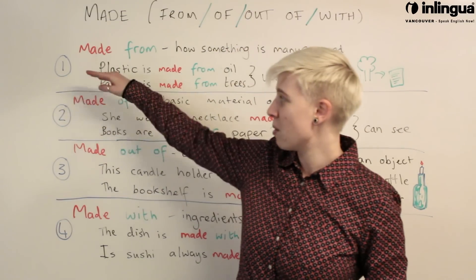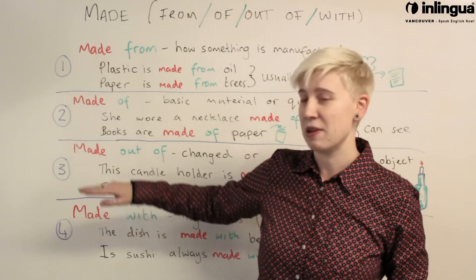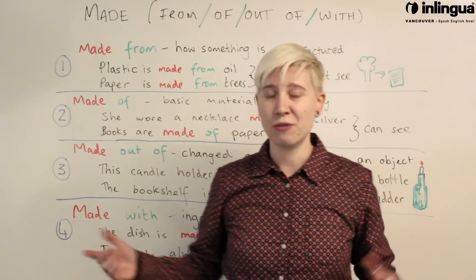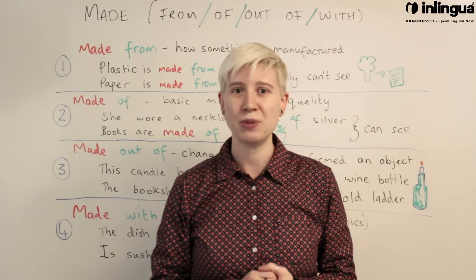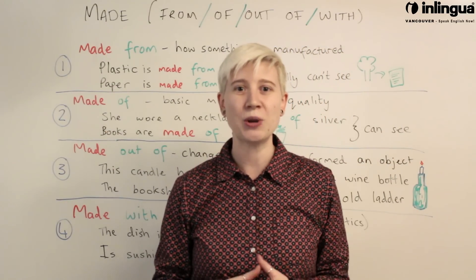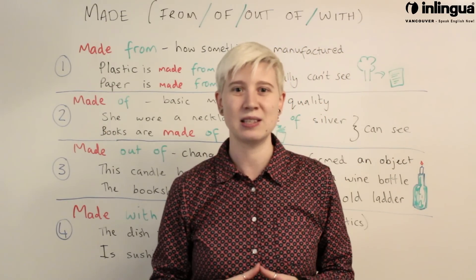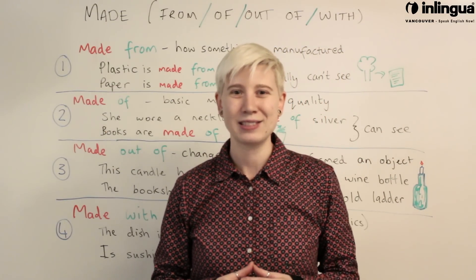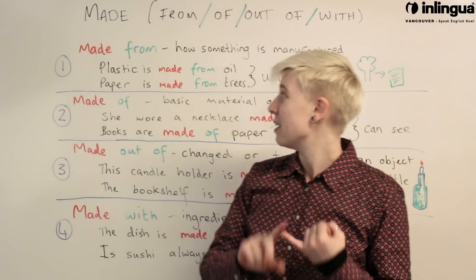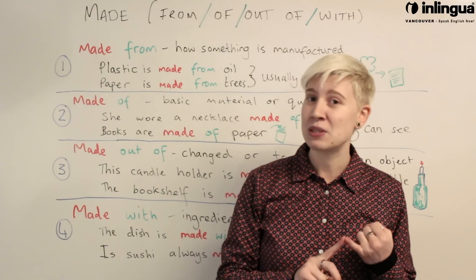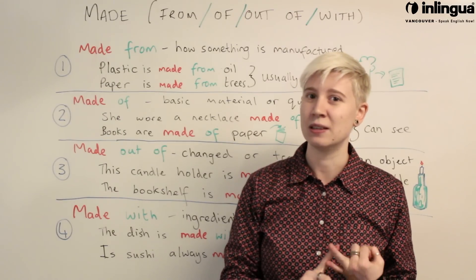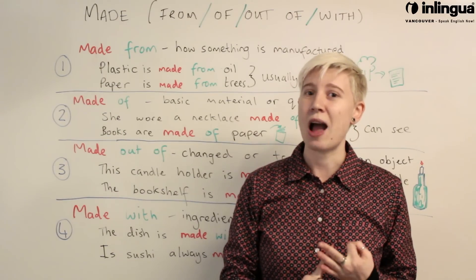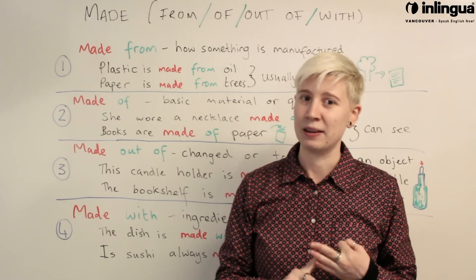I've numbered them one, two, three, four. So if you go to the comments section below, you can give your own example sentences. Tell me something that is made from something, made of something, made out of something, and made with something.